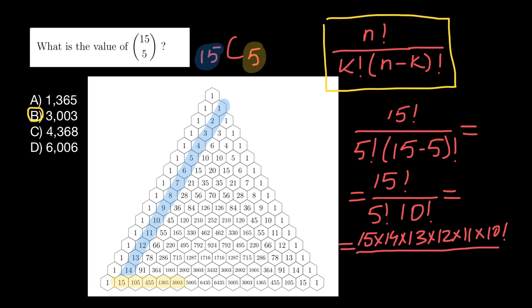And in the denominator, we are going to have 5 factorial and 10 factorial. So that means we can cross out 10 factorial here and 10 factorial here.